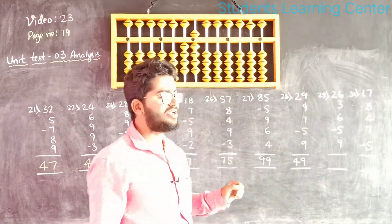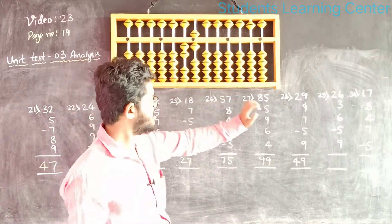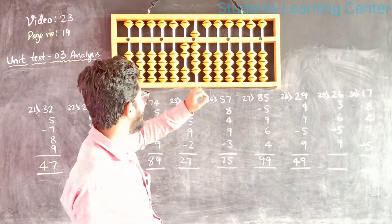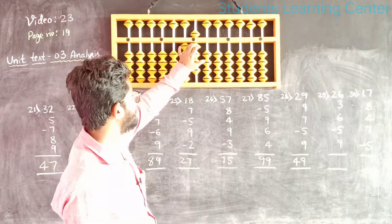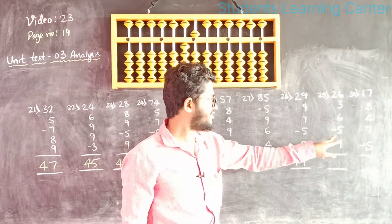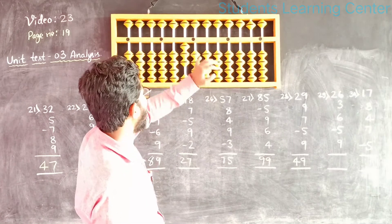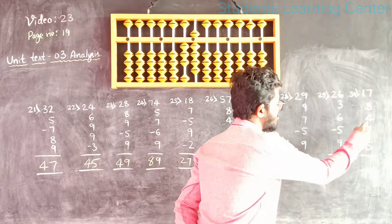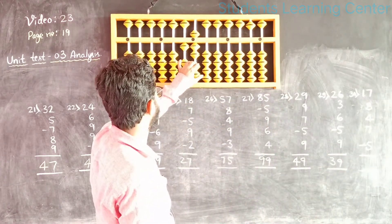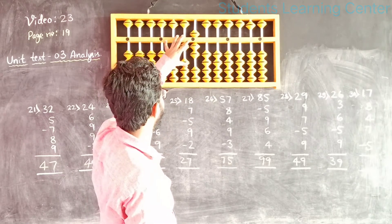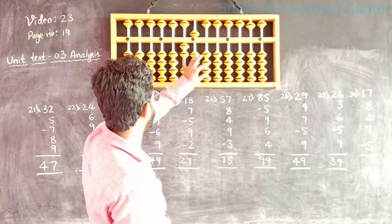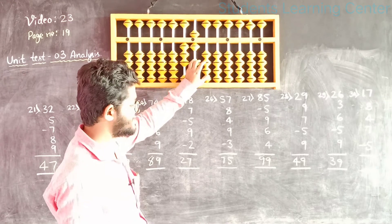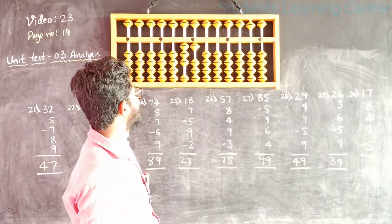Next question. Add 39. Next question. Add 9, add 10 less 4, less 5, add 9. Answer is 39. Last question: add 17, add 8, add 10 less 2, add 4, add 7, add 10 less 3, less 5. Answer is 31.